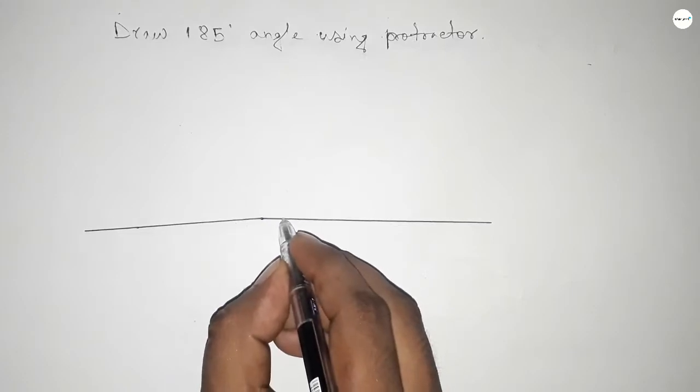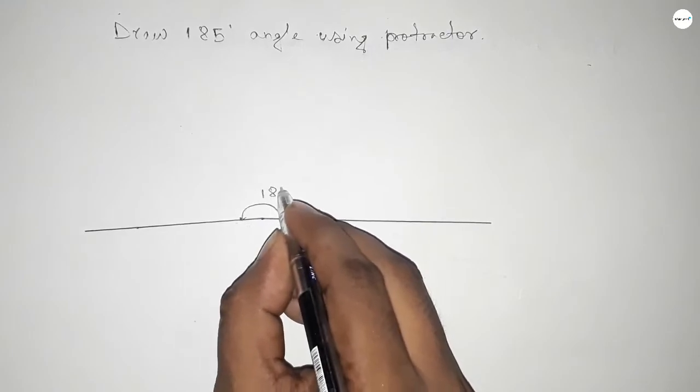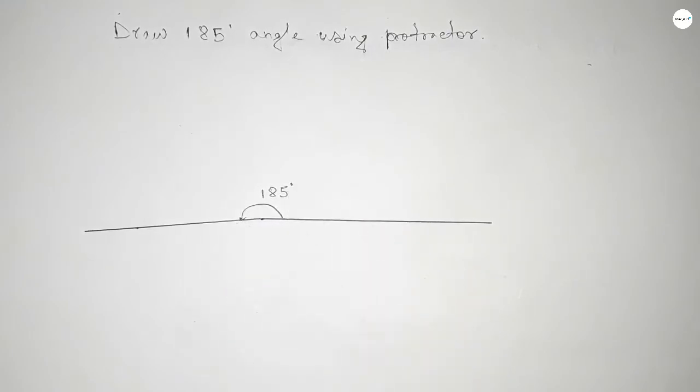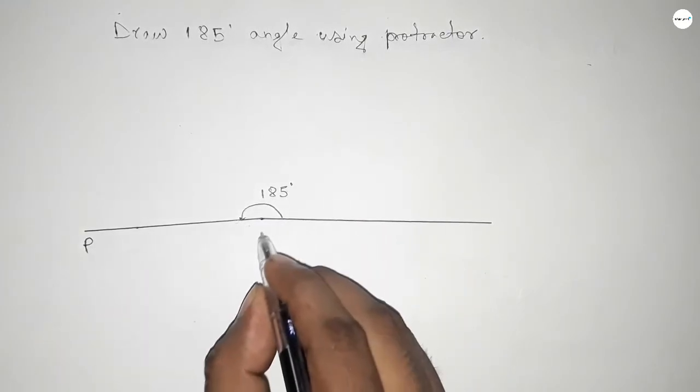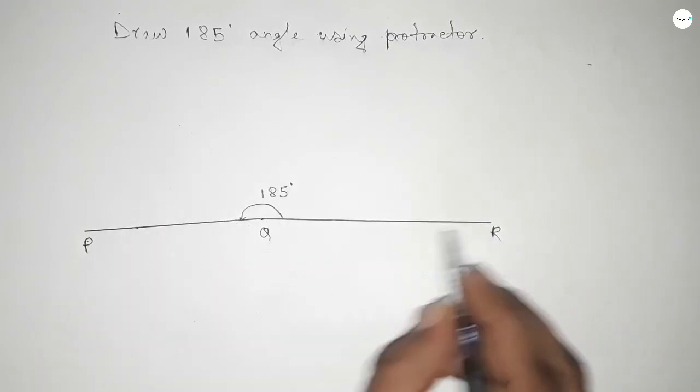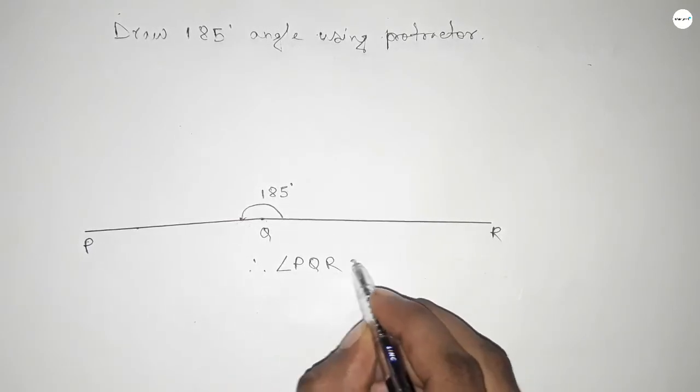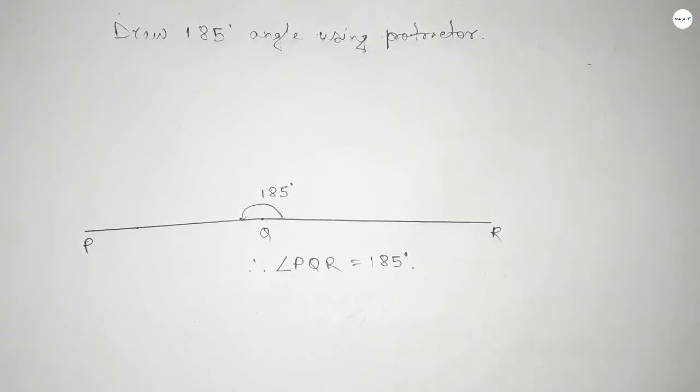And this is P, Q and R. So angle PQR, therefore angle PQR equal to 185 degree. That's all thanks for watching. If this video is helpful to you then please share it with your friend.